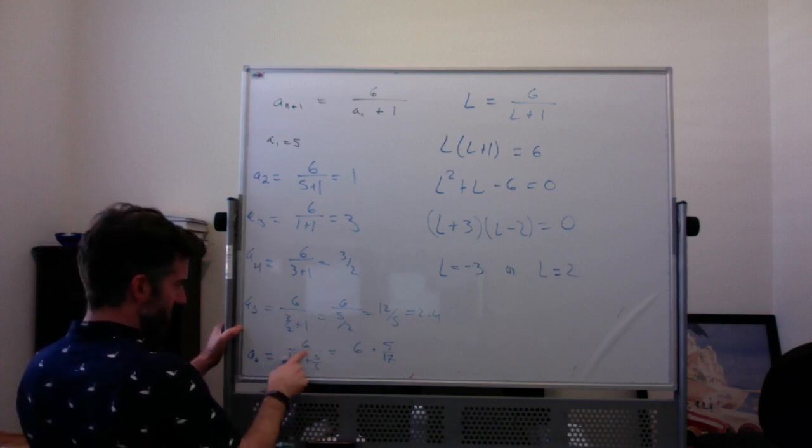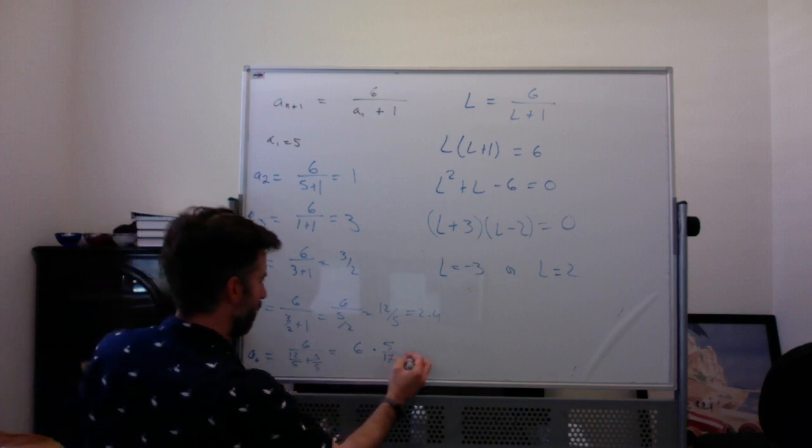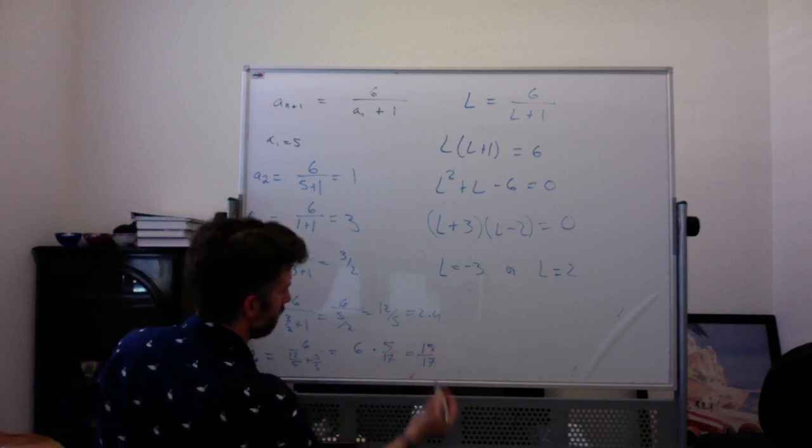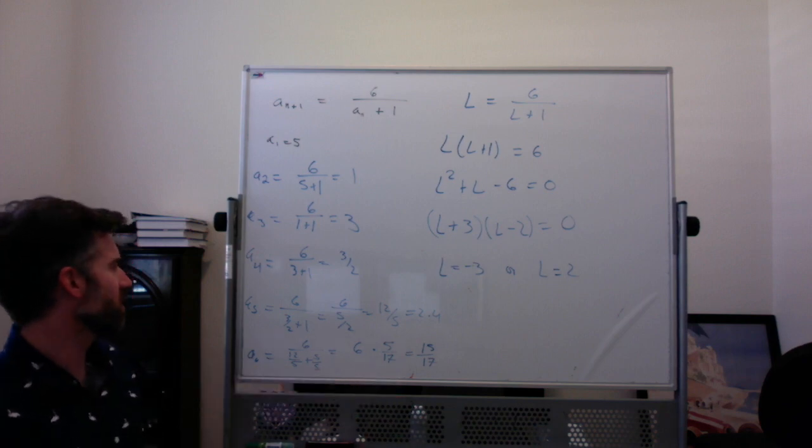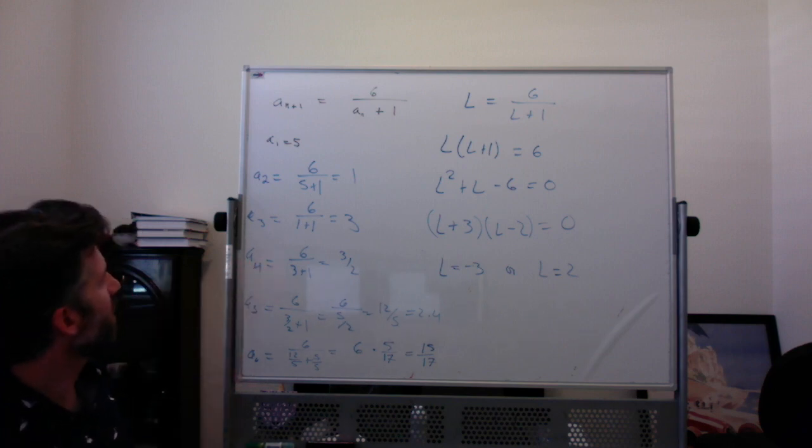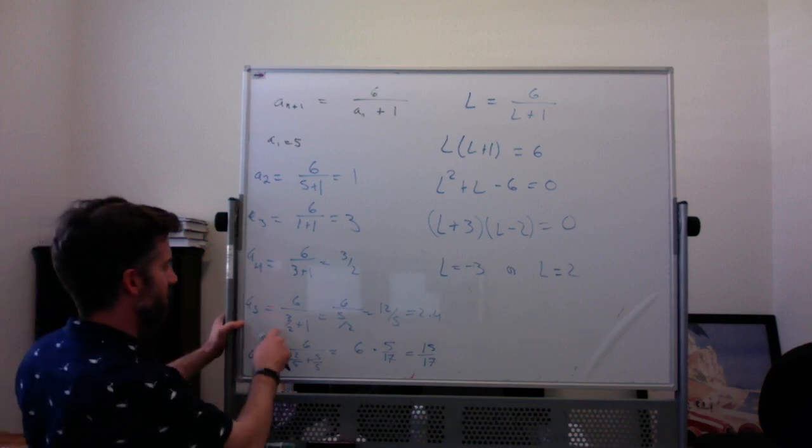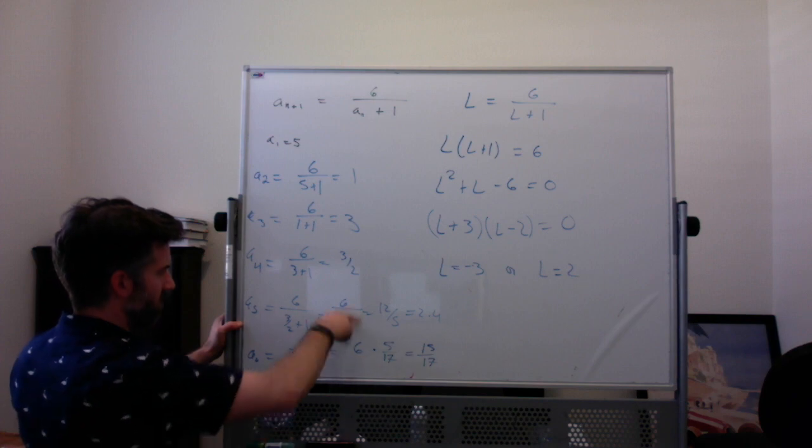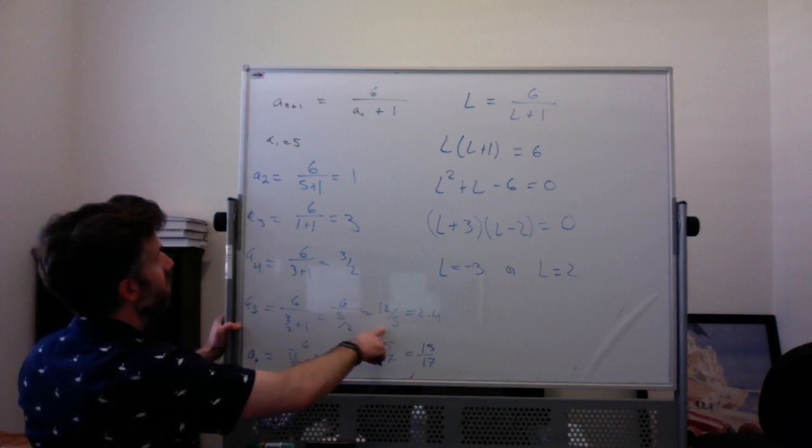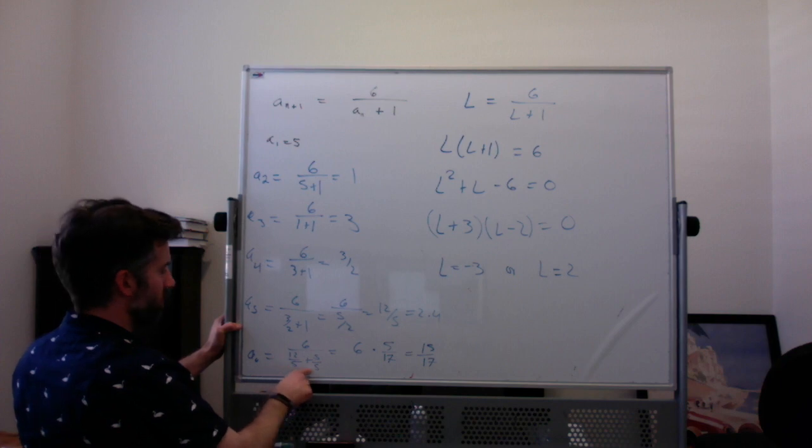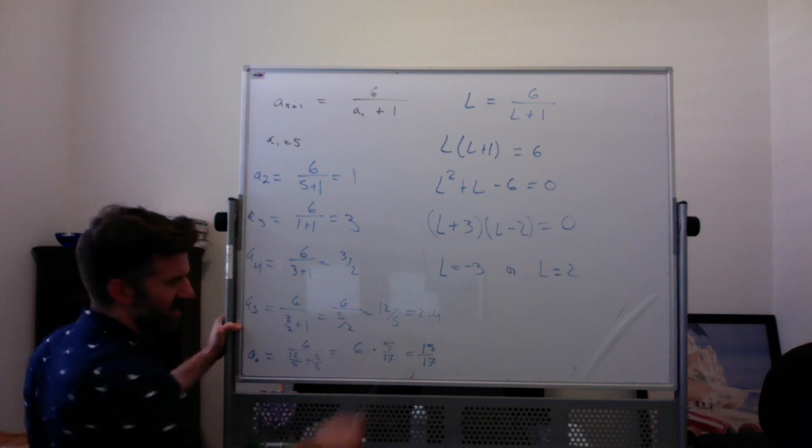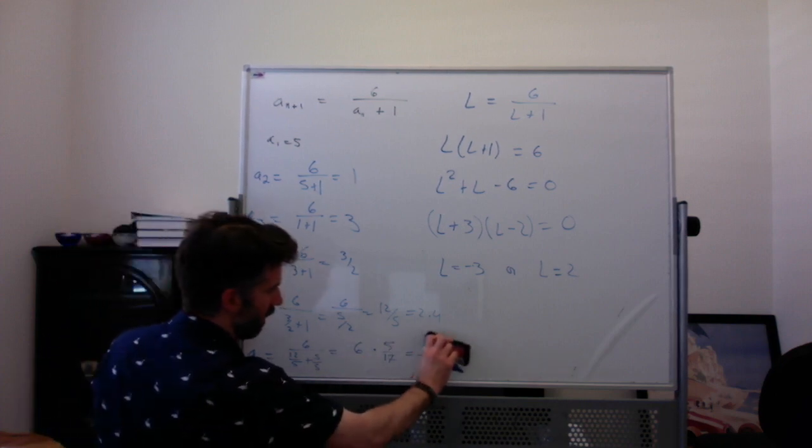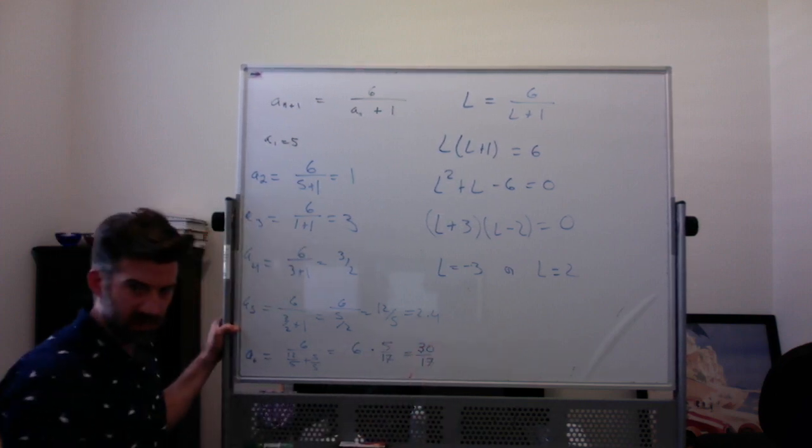17 fifths. We're kind of bouncing back and forth around numbers that are kind of around 2. Although this one, I feel like I got further away from 2. But I don't know if I'm doing something wrong here. Sorry. So 3 halves, 5 halves, 12 fifths, and then 12 fifths plus 1. So 6 times 5 is 30, not 15. Okay, sorry. 30 17ths, which is a lot closer to 2.